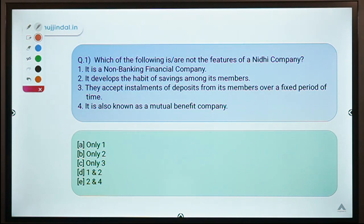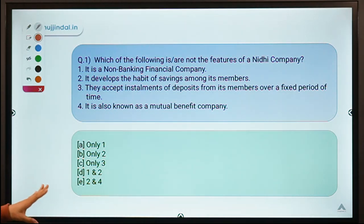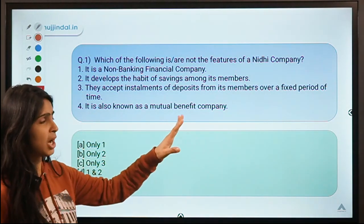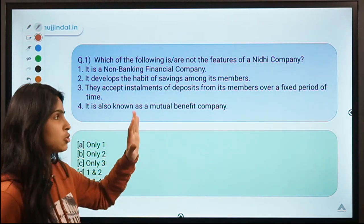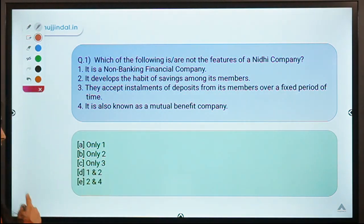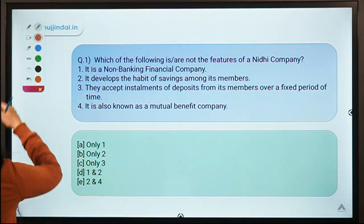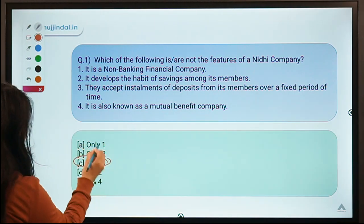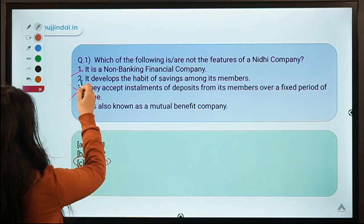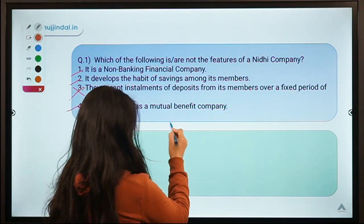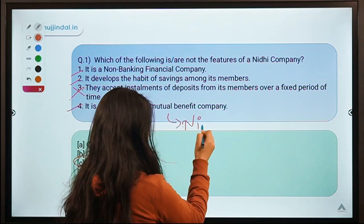This question says which of the following is or are not the features of a Nidhi company. You have to identify which of the points mentioned are not features of this particular type of company. The correct option is option C, meaning only statement 3 is not a feature of a Nidhi company; the rest are features of a Nidhi company.